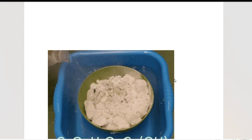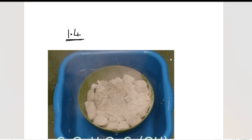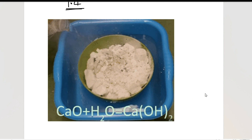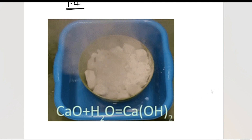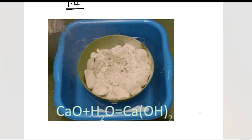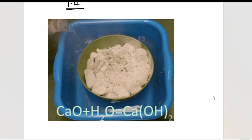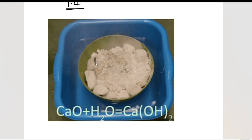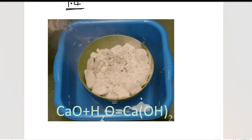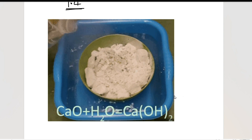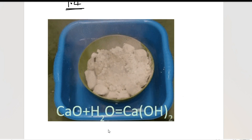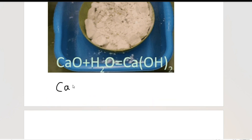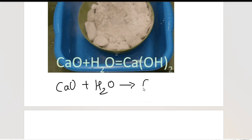The activity given in your textbook is Activity 1.4. They have asked us to take calcium oxide, or quicklime, in a beaker. I found this experiment on the internet — thank you to those who made it. Here, quicklime has been taken and water is being added to it. The formula of quicklime is CaO; the formula of water is H2O.